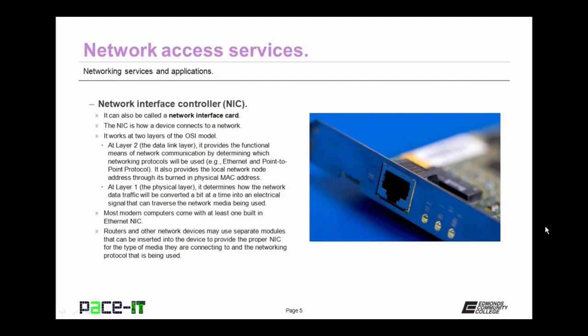The Network Interface Controller works at two layers of the OSI model. At Layer 2, the data link layer, it provides the functional means of network communication by determining which networking protocols will be used — such as Ethernet or point-to-point protocol — and also provides the local network node address through its burned-in physical Media Access Control address. At Layer 1, the physical layer, the NIC determines how network data traffic will be converted, a bit at a time, into an electrical signal that can traverse the network media being used.